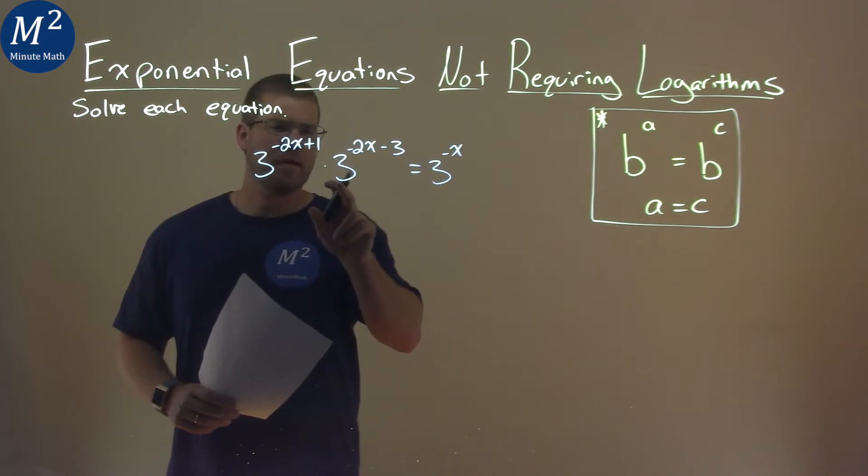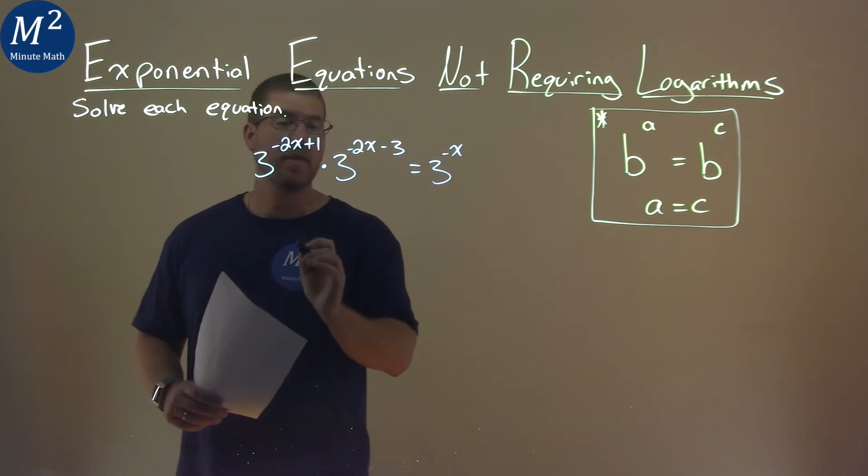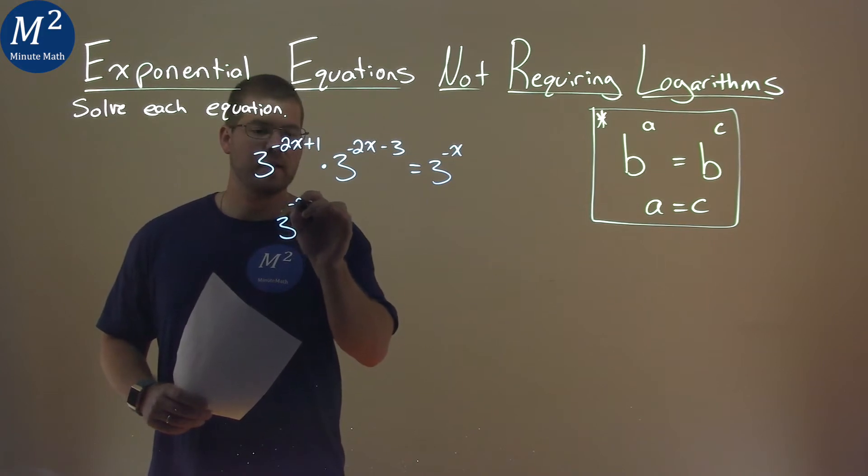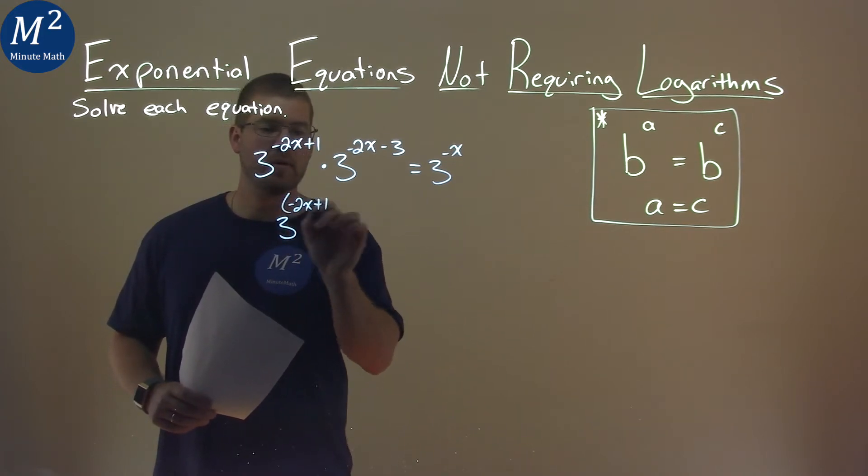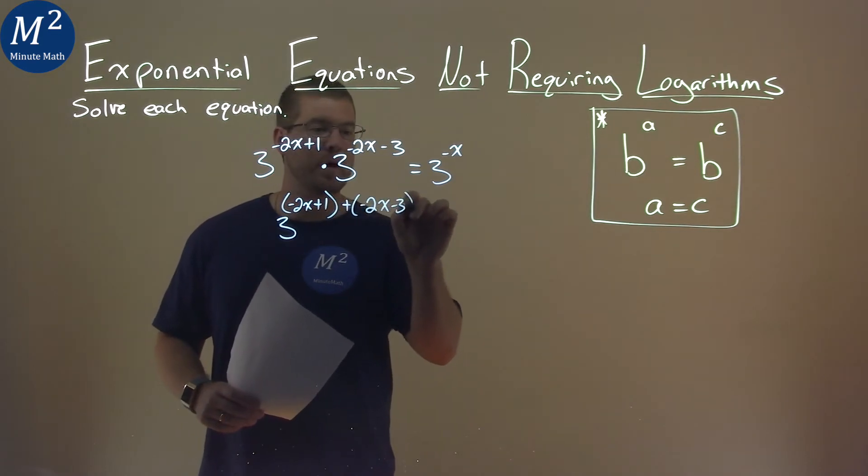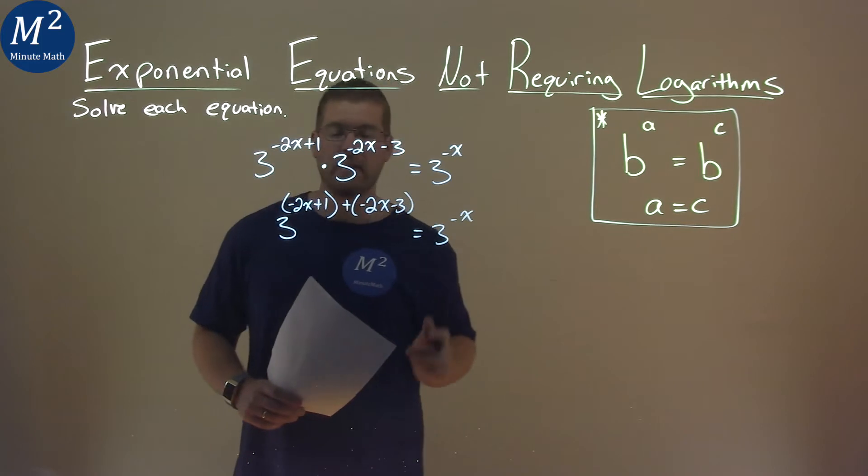First thing I notice is that we have the same base here, 3 and a 3, and it's being multiplied. When that happens, we add the exponents and keep the same base. So, we have 3 now to the negative 2x plus 1 power plus negative 2x minus 3 power, and that's just going to be equal to 3 to the negative x power.